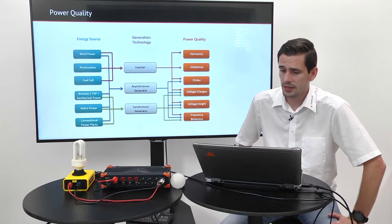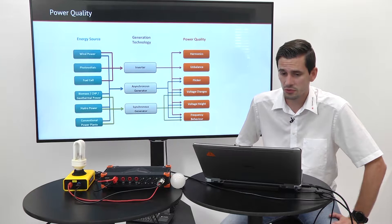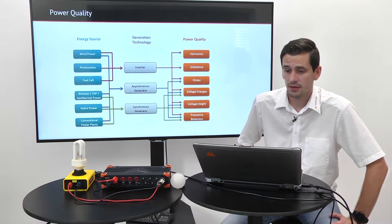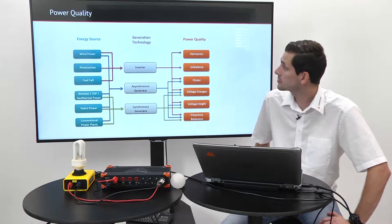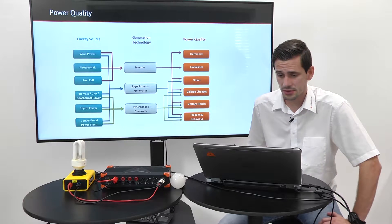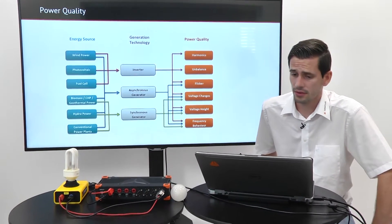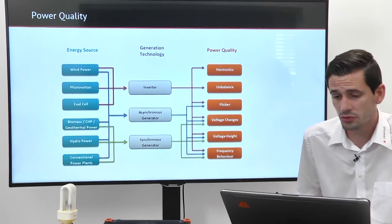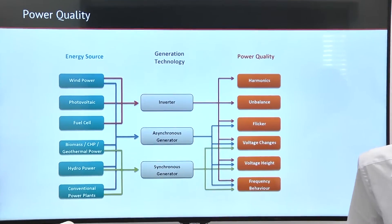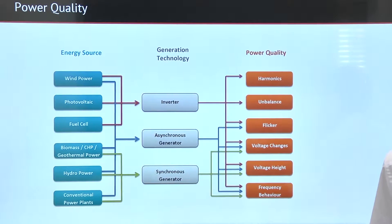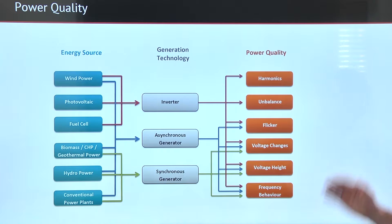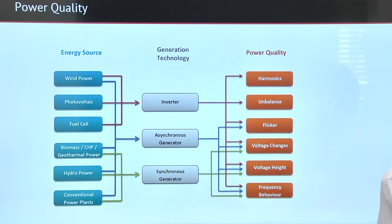In the electrical grid we have different sources of energy, different generation technologies like inverters, generators, and also different kinds of loads. All of these loads and generation technologies emit different power quality parameters, such as harmonics, imbalance, flicker, voltage changes, and frequency changes.